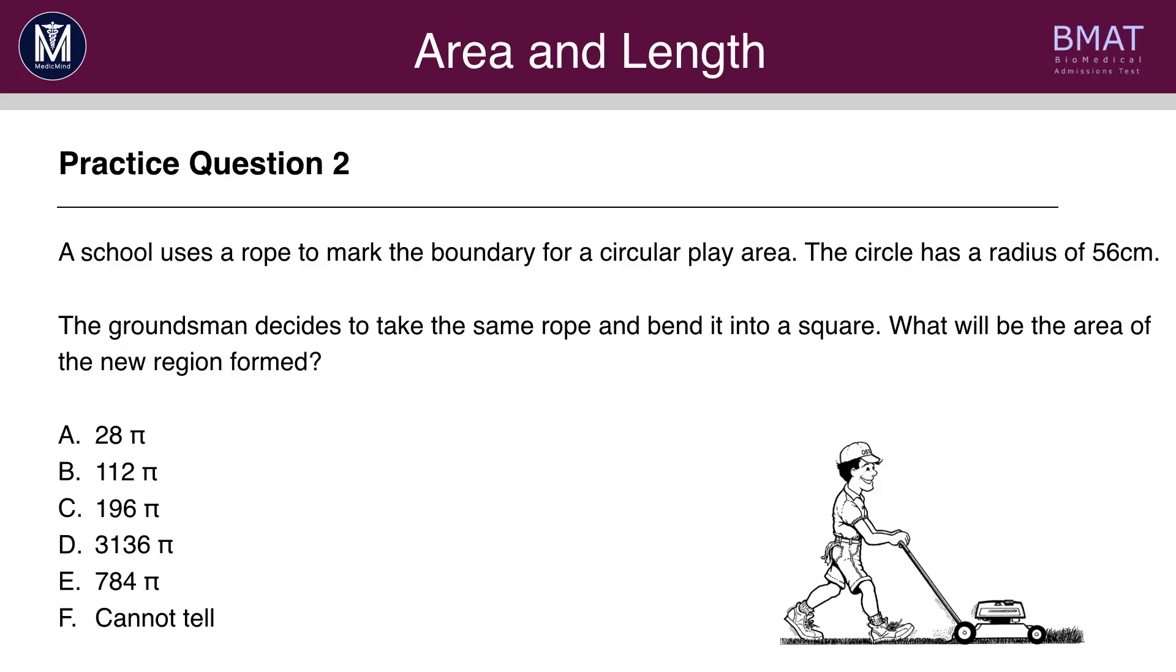Question 2. Pause the video and have a go. The answer here is E. First of all, we want to work out the length of the rope. And to do this, we need to work out the circumference of the circle. The formula for the circumference of a circle is πd. The circle has a radius of 56, so therefore, the diameter d would be 112. So the circumference would be 112π.